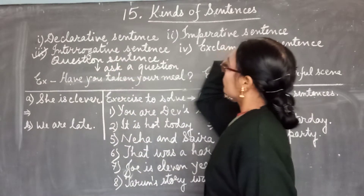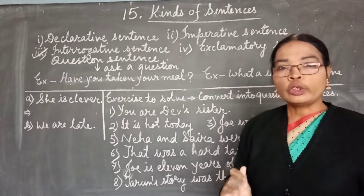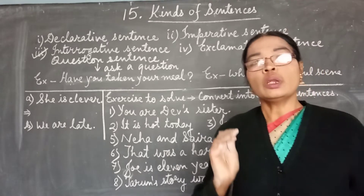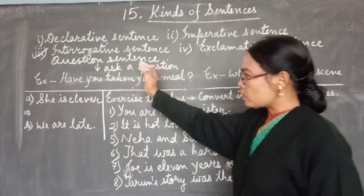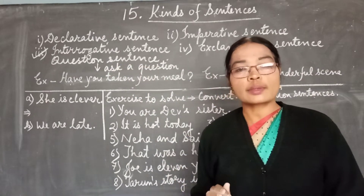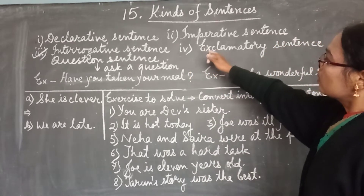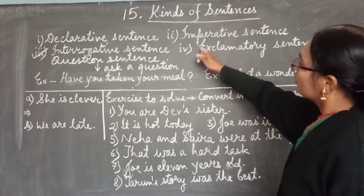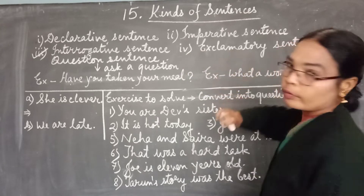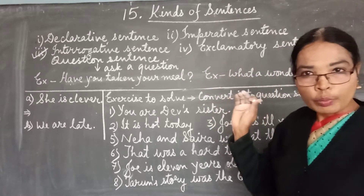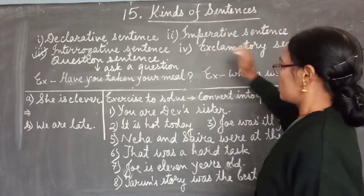So, declarative is over, imperative is over. We started with interrogative today — our interrogative sentence is used when we are asking a question. Now we will move to sentence number four, which is our exclamatory sentence.